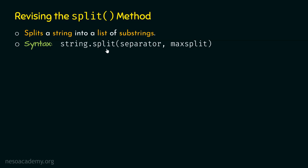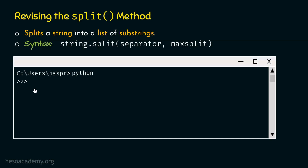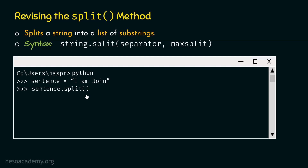Now that we understand the syntax, let's move on to the example. Let's open the command prompt and activate the Python interactive shell. Let's say we want to split the string 'I am John'. The sentence variable is pointing to this string. We can use this sentence variable in place of the string to split it. Let's type sentence.split without any arguments.